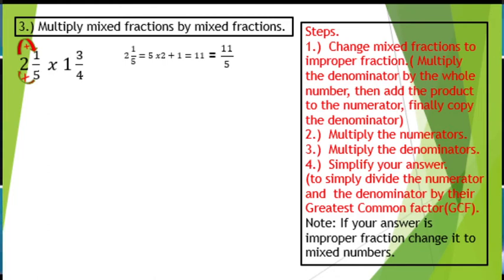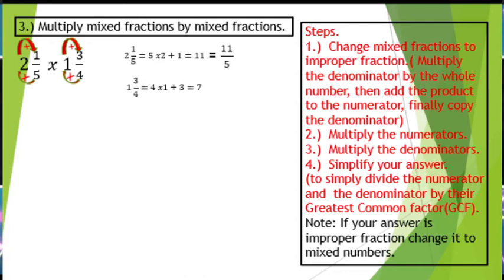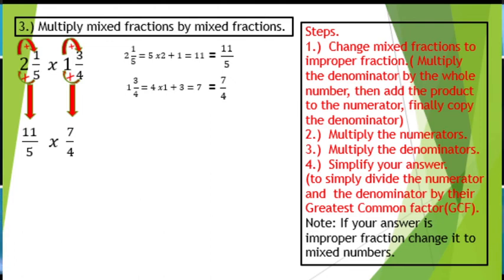Let us now change 1 and 3 over 4 into an improper fraction. Again, 4 times 1 equals 4, plus 3 equals 7. So the numerator is 7, then copy the denominator 4. So we have 2 and 1 over 5 which equals 11 over 5, and 1 and 3 over 4 which equals 7 over 4. We can now multiply them.